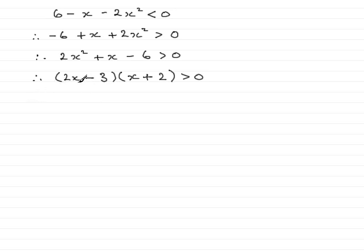So the critical values are when this equals 0. So let's just put that down. We'll put for the critical values. For the critical values we see that 2x minus 3 must equal 0 or x plus 2 equals 0.